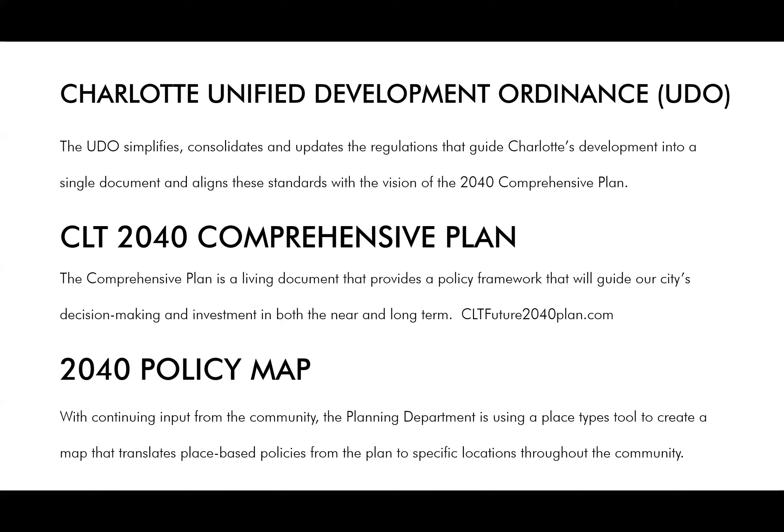A few other background and planning-related items: the first being the Charlotte Unified Development Ordinance. The UDO simplifies and consolidates while updating regulations that guide Charlotte's development into a single document, aligning the standards of the 2040 Comprehensive Plan. The Charlotte 2040 Comprehensive Plan is a policy document — a living document and framework meant to guide city decision makers and investment in the near and long term. There's also the 2040 Policy Map, which is a future land use map helping identify land uses that are most suitable for development.